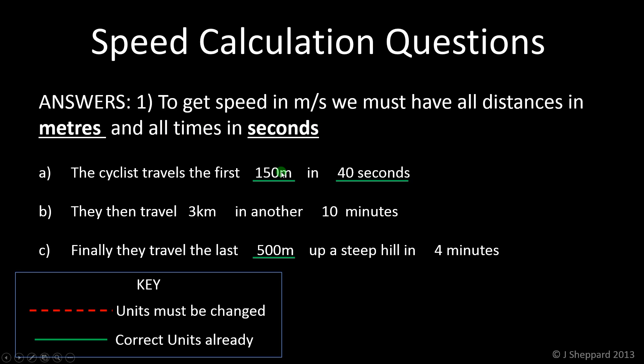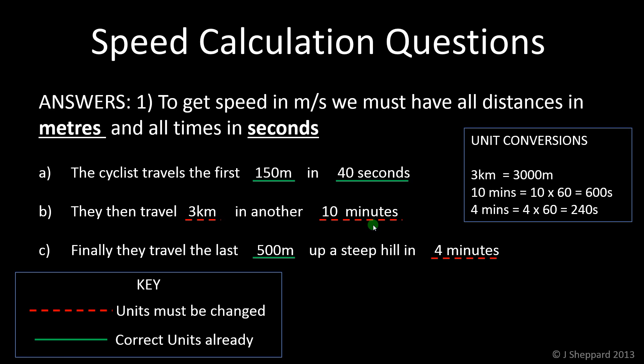So, if we look, there are three quantities in the standard units. 150 meters is fine, 40 seconds is fine, 500 meters also fine. But kilometers and minutes are not the standard units. So, we'll need to change those before we can do the calculations. So, we're going to do all of them together at the start and convert. And so, the box shows you three kilometers is 3,000 meters. Every time you see the little k, that means kilo, it's always a thousand, 1,000 grams in a kilogram, 1,000 meters in a kilometer. And as we all know, 60 seconds in a minute. So, if you have 10 minutes, that's 600 seconds, 4 minutes, 240 seconds. So, we're just going to change those now and replace them. There goes the 3 kilometers, there goes the 10 minutes, and there goes the 4 minutes there.